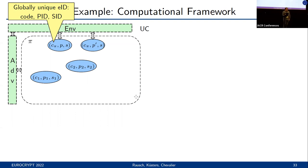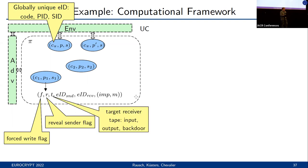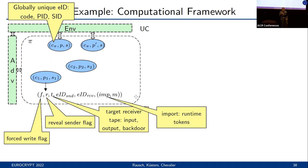Instances can send messages to each other by issuing an external write command of the following form, which consists of: a forced write flag that distinguishes different types of external writes; a real sender flag; a target receiver tape, which can be the input, output, or backdoor tape; the extended identities of both sender and receiver, including their codes; a number of import or runtime tokens that the sender forwards to the receiver; and of course, the message body itself.